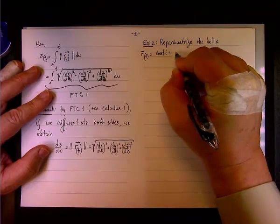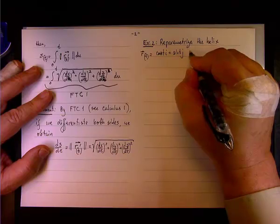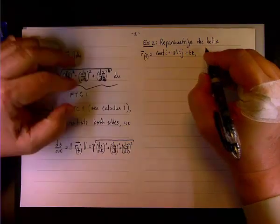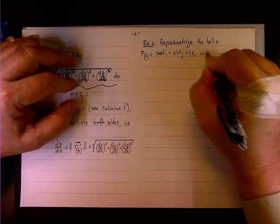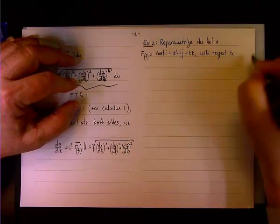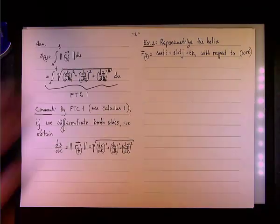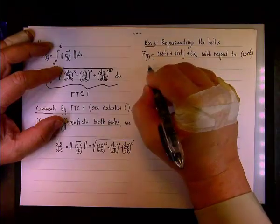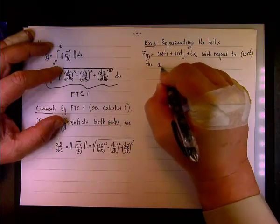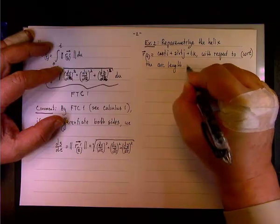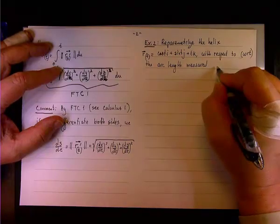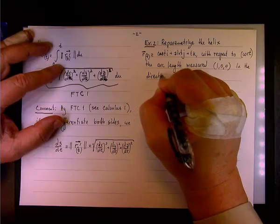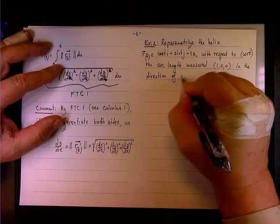The curve is cosine(t)i + sine(t)j + tk. We want to re-parameterize the helix with respect to the arc length measured from the initial point (1, 0, 0) in the direction of increasing t.